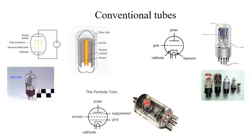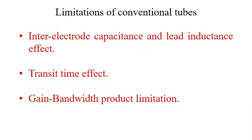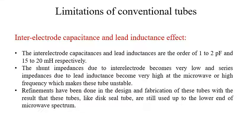With time, most of the tubes have been replaced by solid-state devices. But when considering the case of microwaves, we have several problems associated with these types of tubes. So let us try to understand those problems — the limitations of conventional tubes. The first limitation is inter-electrode capacitance and lead inductance effect. The second is the transit time effect. The third is the gain-bandwidth product limitation.